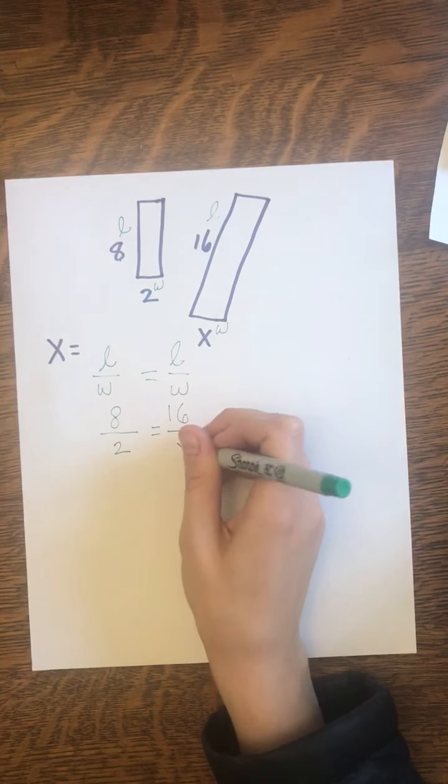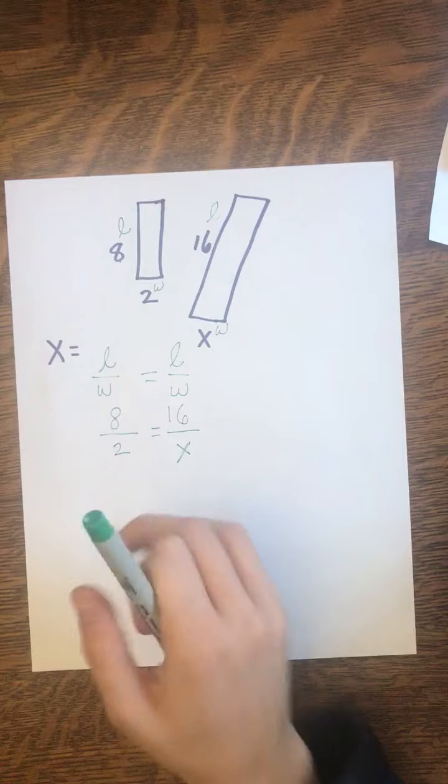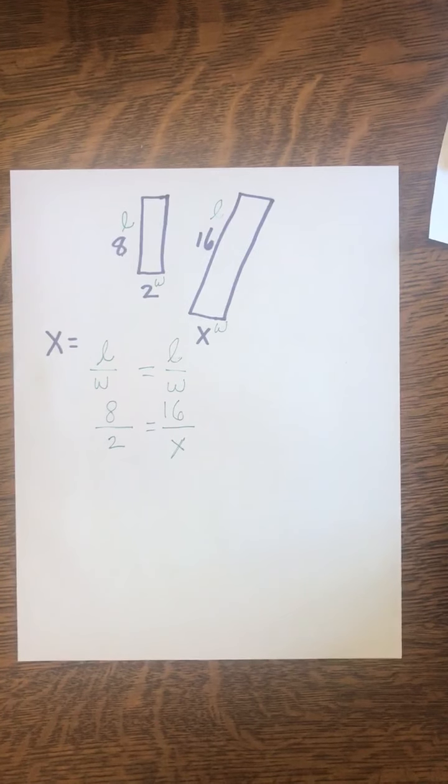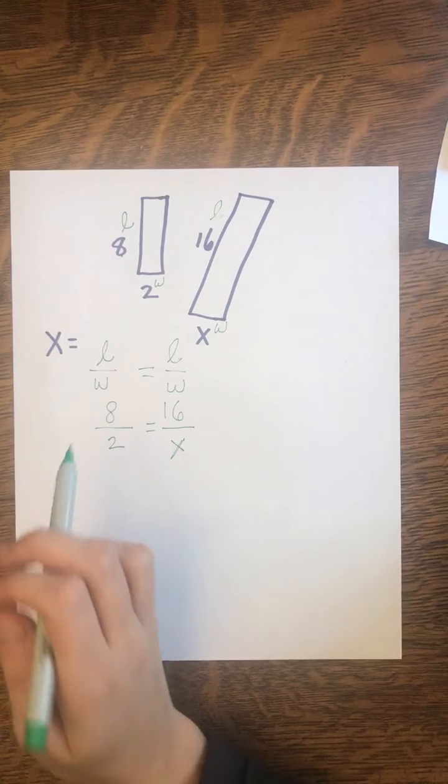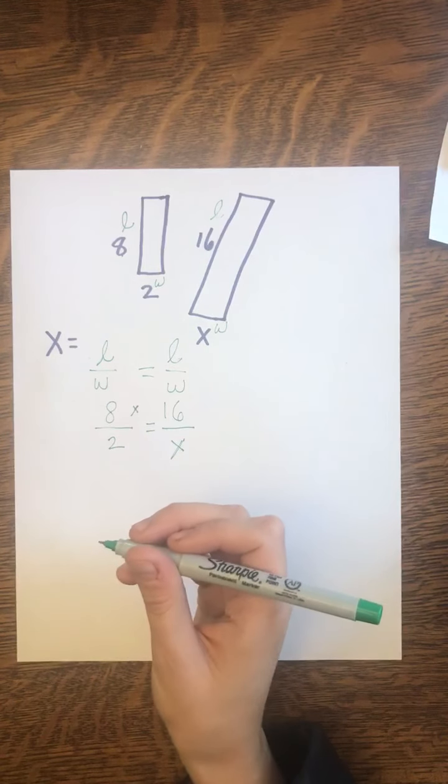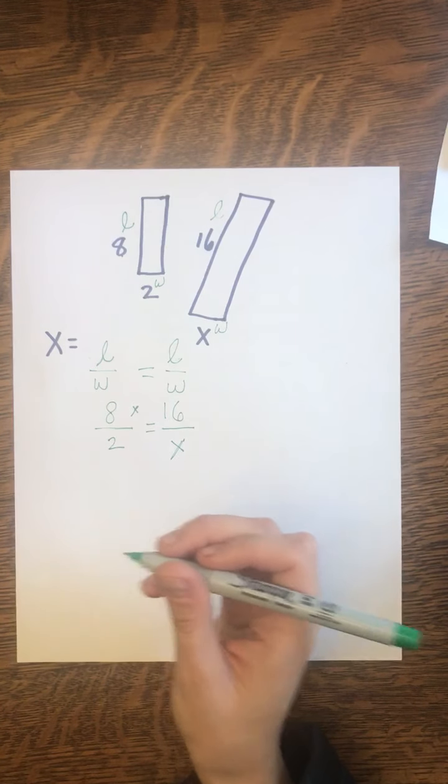8 is the length of the smaller rectangle. 2 is the width of the smaller rectangle. And in this case, I don't think I need to cross multiply because I can tell. Sorry, that's my dog. We're just going to continue.